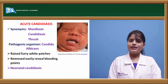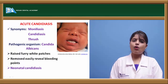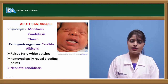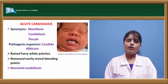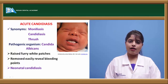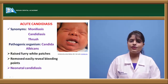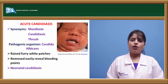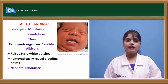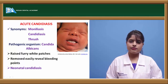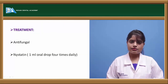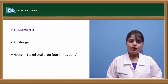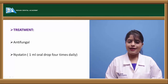Acute candidiasis, also known as moniliasis or oral thrush, is generally seen in very young children. The main causative organism is Candida albicans. It presents as raised white furry patches on the oral mucosa or gingiva; when removed, they reveal red bleeding points. This is also known as neonatal candidiasis. Treatment involves antifungal medications like clotrimazole or nystatin — generally 1 ml of oral nystatin drops given four times daily to a neonate.